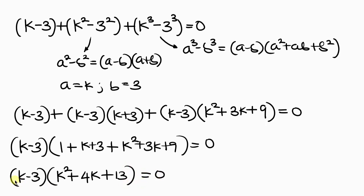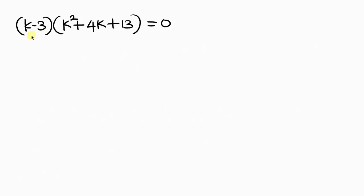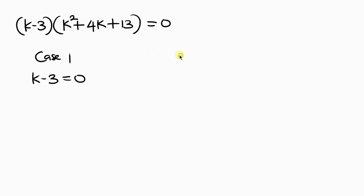We have two cases to solve. Case 1 is k minus 3 equal to 0. We can easily get the value of k by moving the 3 to the right-hand side, and when we do that we have k equal to 3. This is the only real solution we're going to have.